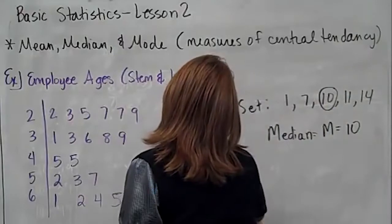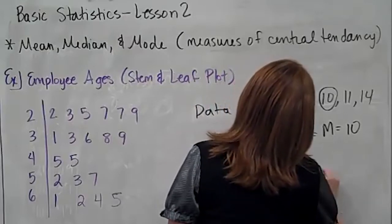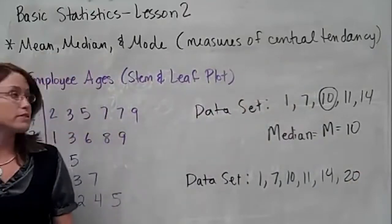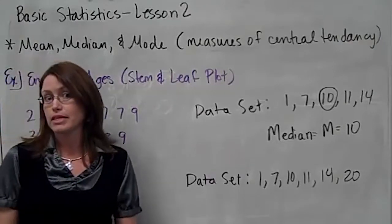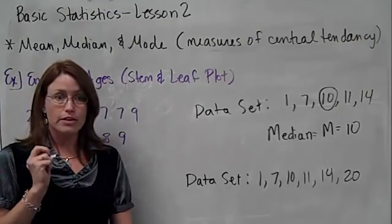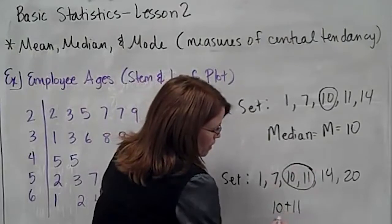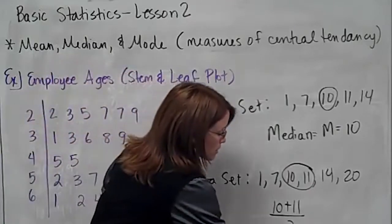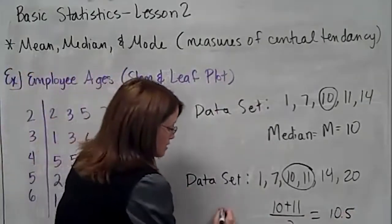But what if N were even? Same data set — 1, 7, 10, 11, 14, and 20 — now N is six. Is there one number in the middle? No — there are two numbers in the middle. What you do with those two numbers is add them together and divide by two, like you're averaging. That turns out to be 10.5. This is your median.